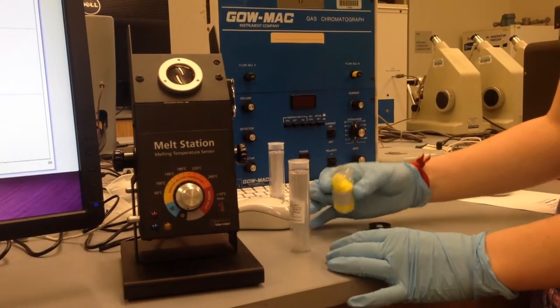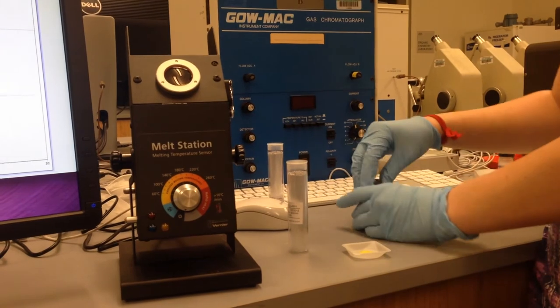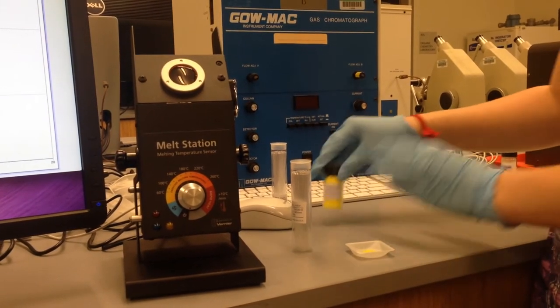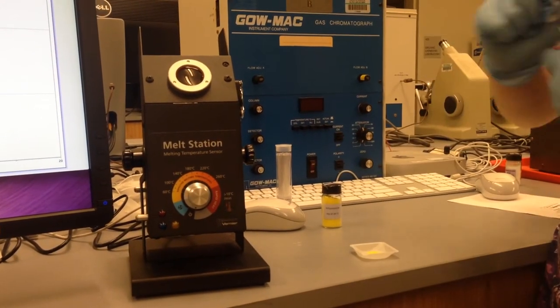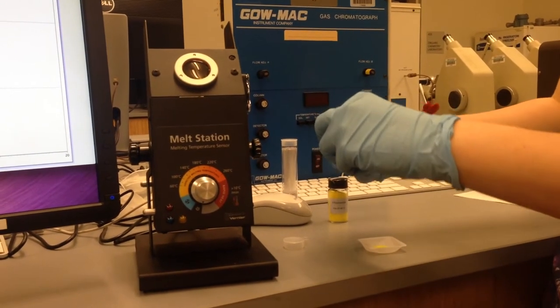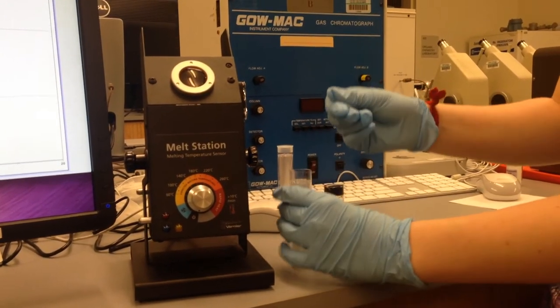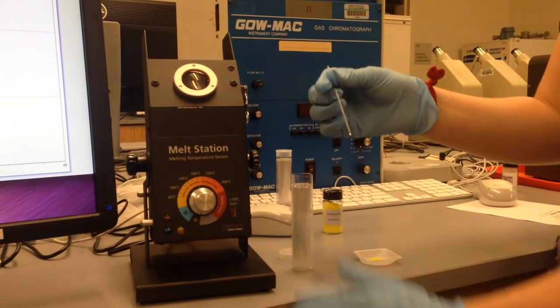Pour out some sample into a small weighboat. This will make sure that the rest of the sample in the vial doesn't get contaminated by the capillary tubes. As for the capillary tubes themselves, this is where the sample will be doing its melting. They are open on one end and closed on the other.